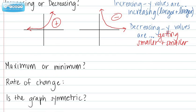Now an exponential function has no minimum or maximum. Notice it goes on forever to positive infinity and negative infinity. There is no constant rate of change.